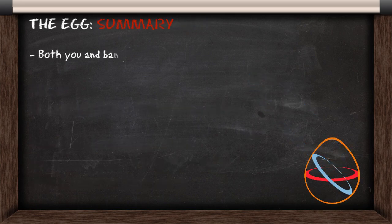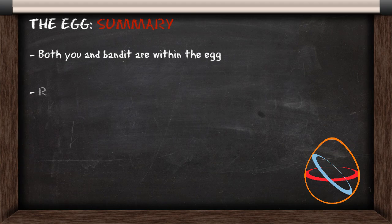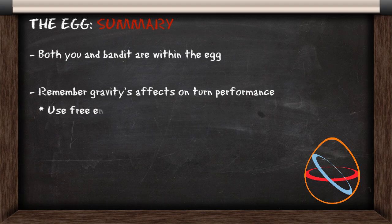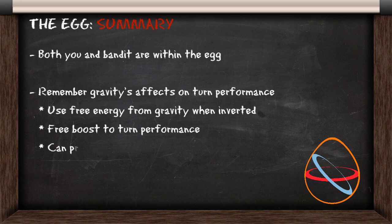When you're fighting a bandit, both you and the bandit hold within the tactical egg together, but you're in your own planes of motion. So you need to remember gravity's effects on turn performance for both of you. By using the energy from gravity when you're inverted, it gives you a boost to your turn performance, which can provide an advantage in a dogfight.